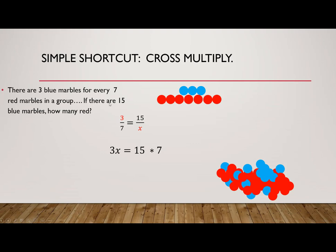We write the ratio like this: 3 to 7 equals 15 to how many? Matching red to red, blue to blue.